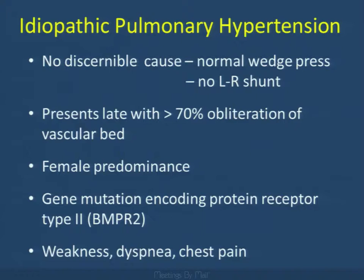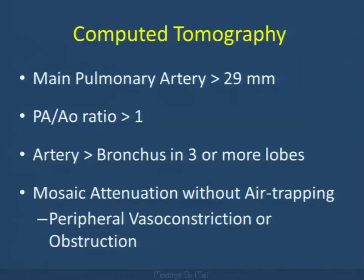Idiopathic pulmonary hypertension has no discernible cause and no left or right shunt. Patients often present with greater than 70% obliteration of the vascular bed, with a female predominance. Some gene mutations encoding protein receptors have been identified. They present with dyspnea, often chest pain, and generalized weakness. Very often we're not the first to diagnose — this is typically found on cardiac echo or after cardiac cath.